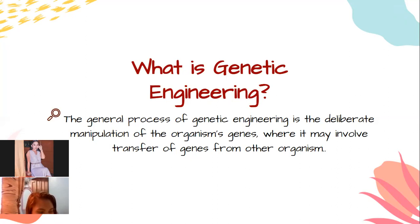In 1951, the term 'genetic engineering' was coined by Jack Williamson — whose real name was John Stewart Williamson — author of the science fiction novel Dragon's Island (2004). He was an American science fiction writer, often called the dean of science fiction. Through continuous research and development findings on DNA's roles and structure, genetic engineering is no longer confined to science fiction; it became a reality in science and laboratories. Jack Williamson is also credited with one of the first uses of the term 'genetic engineering.'